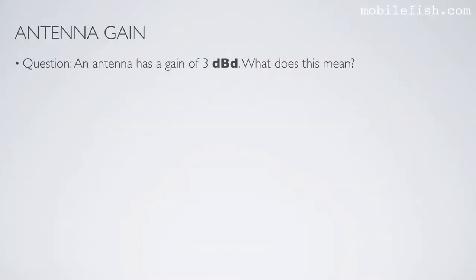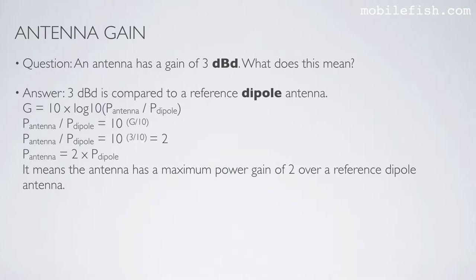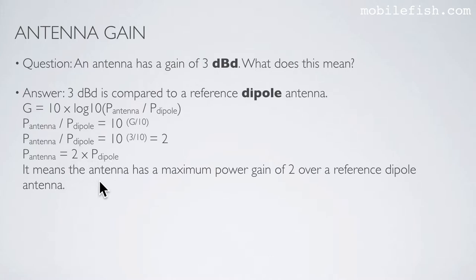An antenna has a gain of 3 dBd — this means it is compared to a reference dipole antenna. Using the gain equation rearranged, entering 3 dBd gives a value of 2. So P_antenna is 2 times P_dipole — the antenna has a maximum power gain of 2 over a reference dipole antenna.